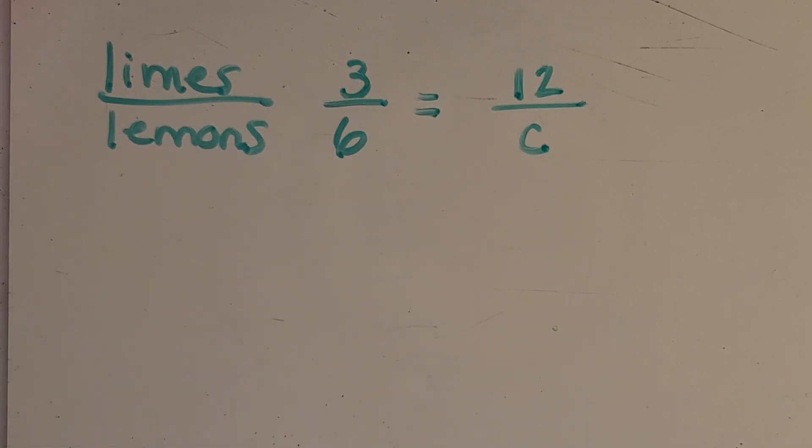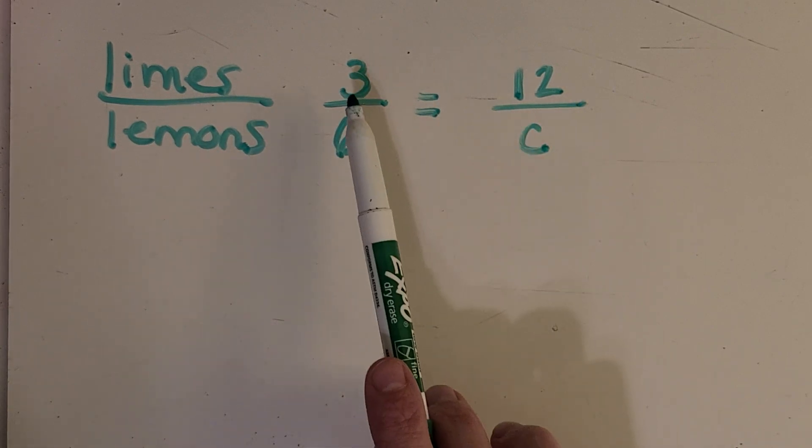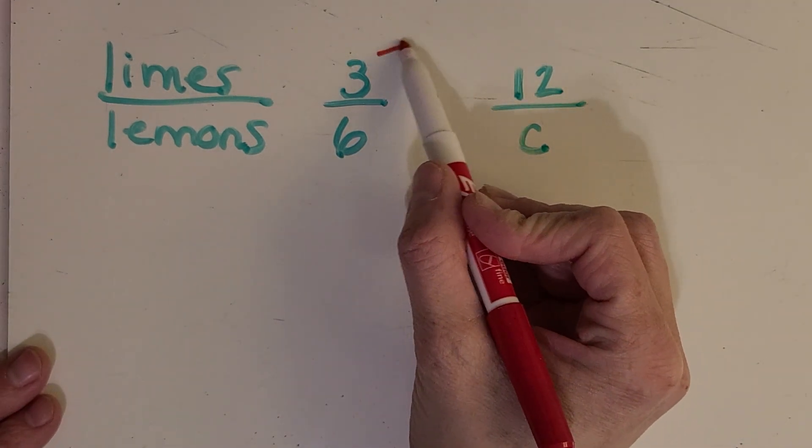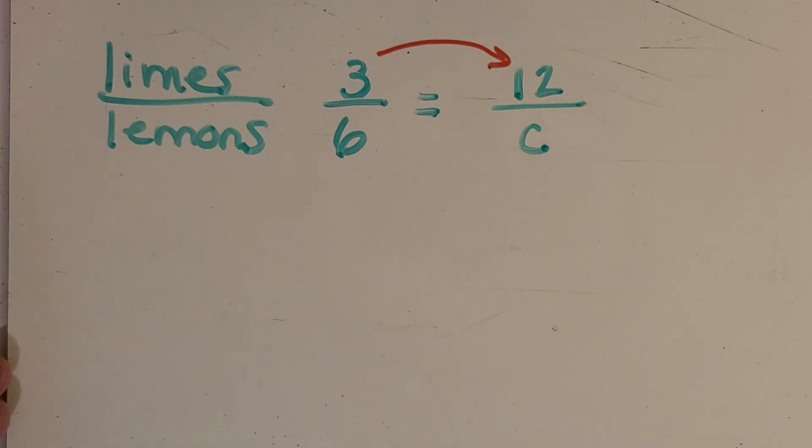Okay, so I want you to think back to your knowledge of equivalent fractions. And what would you do in the past when you're looking at an equivalent fraction like this and you've got a missing part? So what would you do with this 3 and 12? Okay, some of us might be thinking, well, we look for a pattern. So 3 times what equals 12?